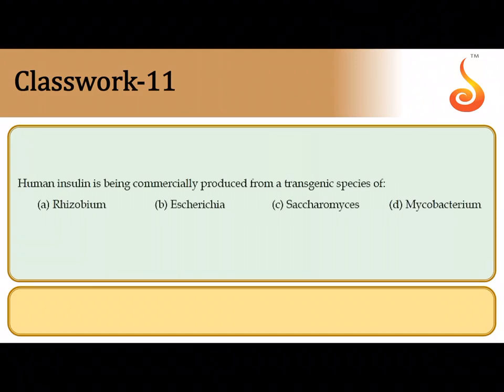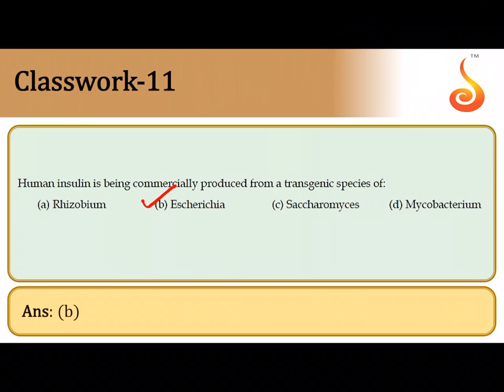The eleventh question: human insulin is being commercially produced from which host? E. coli (Escherichia coli) is the host used to express the human insulin gene.